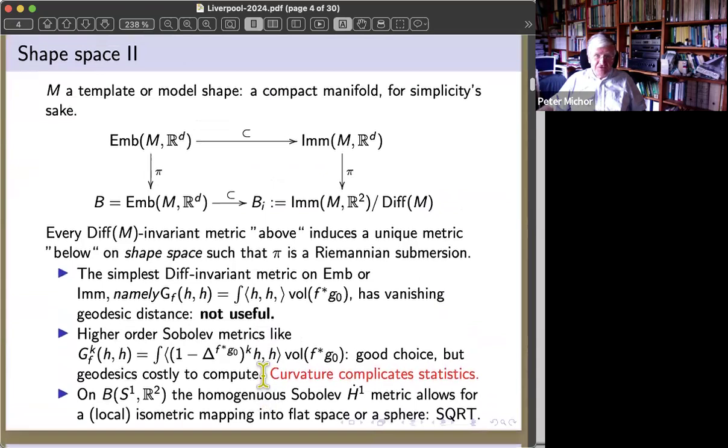Infinite dimensional differential geometry offers a way to do this via geodesic distance of suitable Riemannian metrics. What is a shape space? Let M be a template or model shape, a compact manifold for simplicity. Then we look at the space of embeddings from M into R^d, and this sits into the space of immersions from M to R^d. We have the action of the diffeomorphism group acting by composition from the right on both spaces. If we factor this out on the left, the space B is the base of a principal fiber bundle.